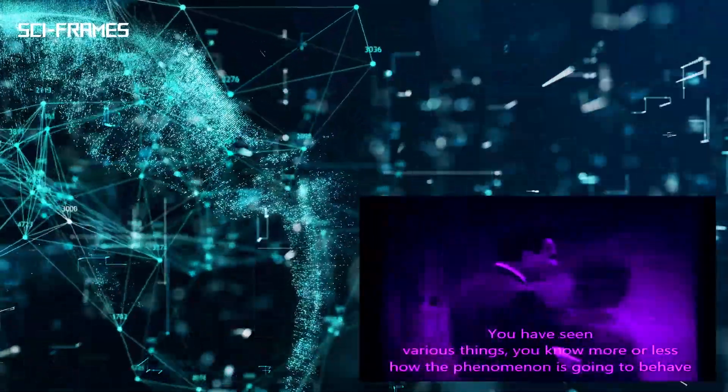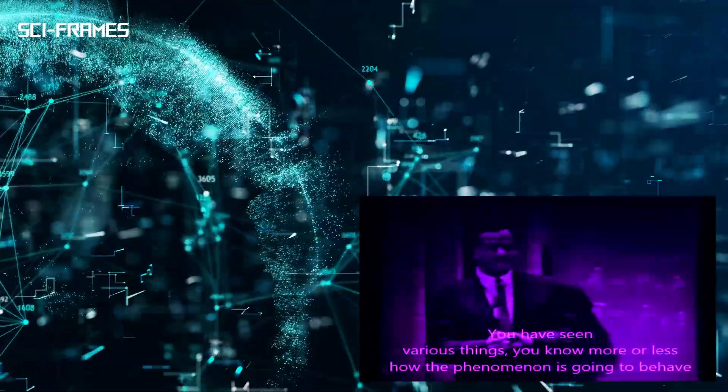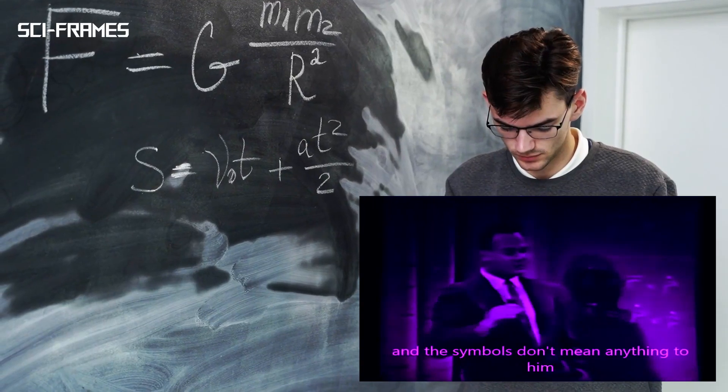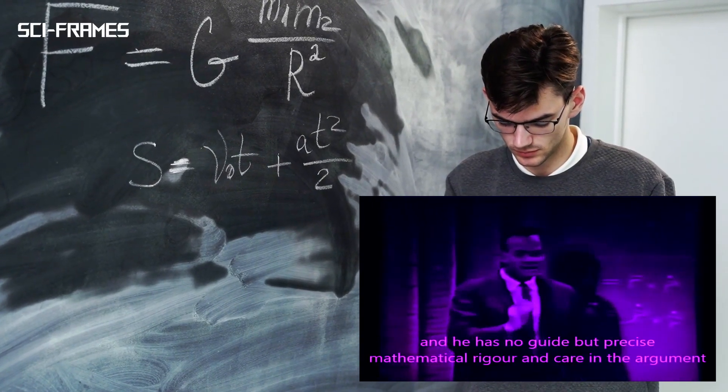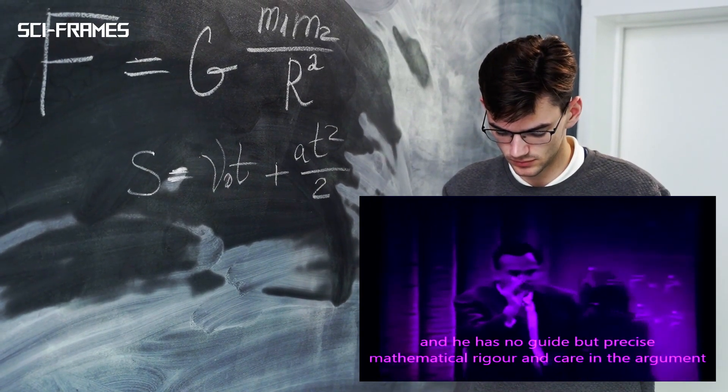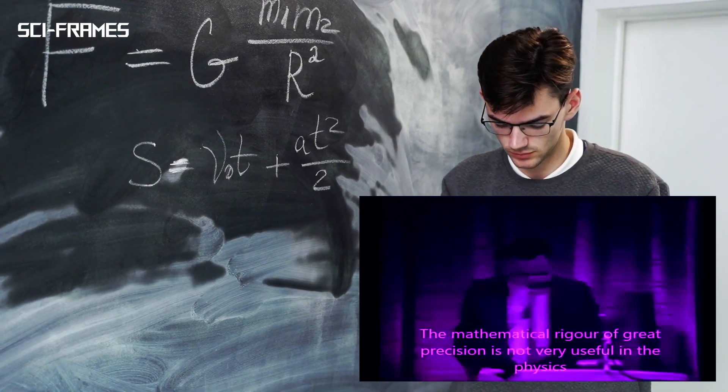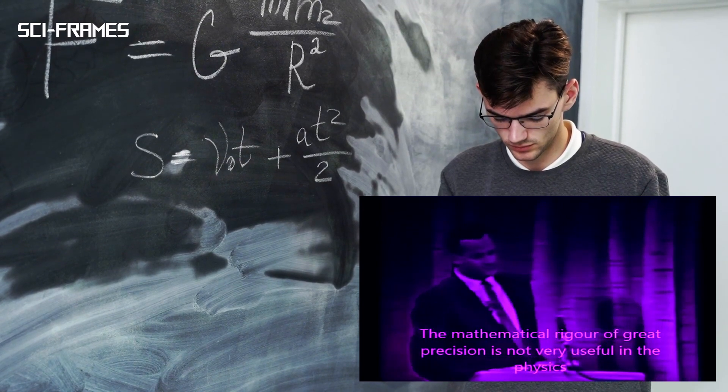Well, the poor mathematician, he translates it into equations and the symbols don't mean anything to him. He has no guide but precise mathematical rigor and care in the arguments. The mathematical rigor of great precision is not very useful in physics, nor is the modern attitude in mathematics to look at axioms.